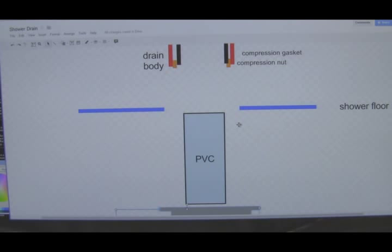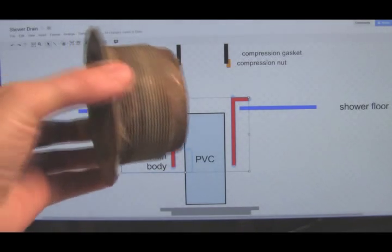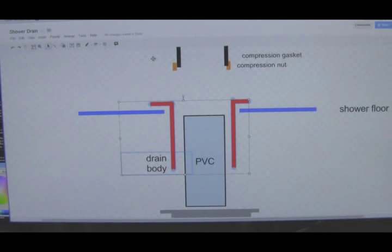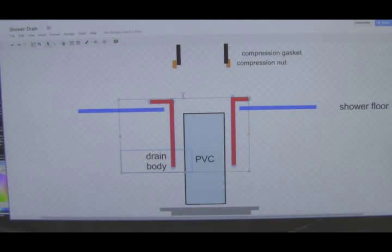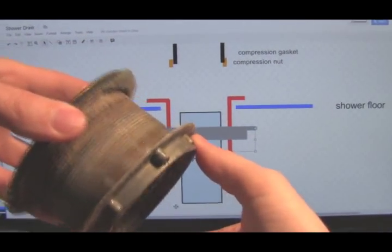So here's how this drain works, starting with the shower floor which is this blue line. The drain body fits down over top the PVC and through the hole in the shower floor. This is actually what the drain body looks like. It's held on to the shower floor with this lock nut that screws on from the bottom, that looks like this piece. So that screws on there like that.